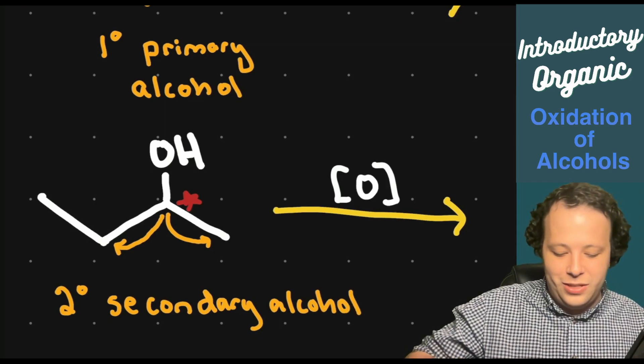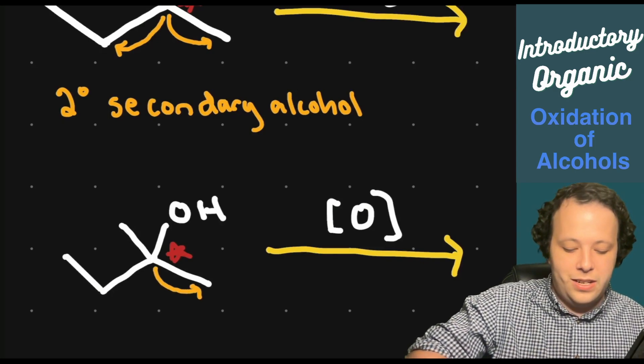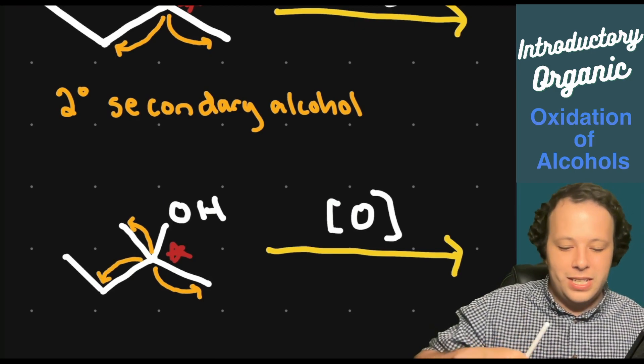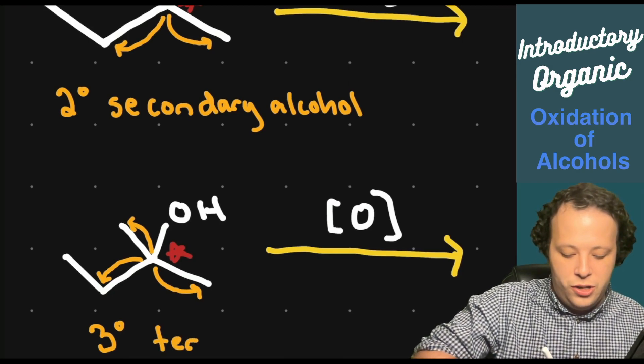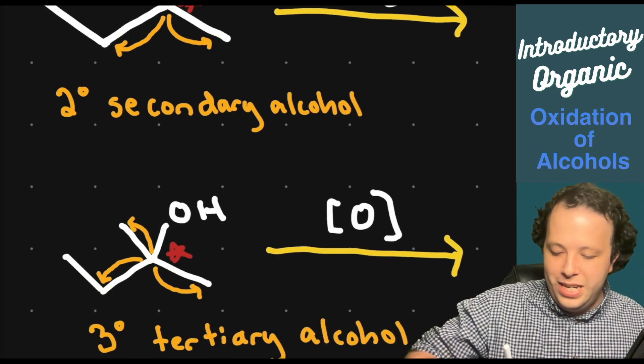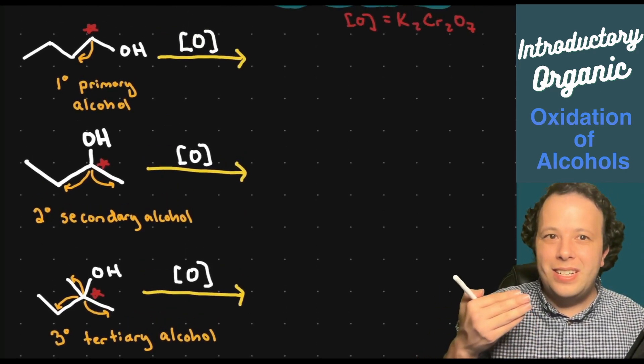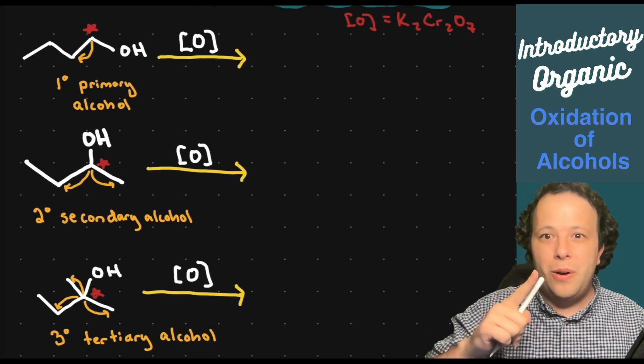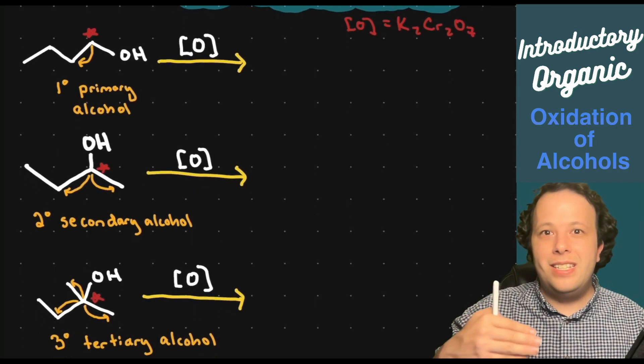What about the last one? The last one is the same general idea. We're going to count our carbons all around, so we have one here, one up top, and then another one on the far side. We have a total of three prime or a tertiary alcohol. Those are the three types of alcohols you're going to commonly see. Let's dive in a little bit more closely to our primary alcohol before we continue to fill in this exact chart.